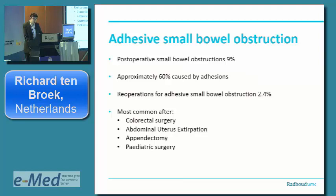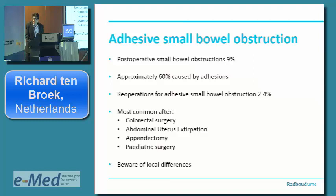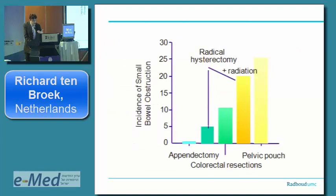Pediatric surgery patients have a long life ahead of them, so they have a lot of time to develop bowel obstruction. We should also beware of local differences — in Japan, for instance, they do a lot of upper GI surgery including intraoperative chemotherapy and radiotherapy, so there are more bowel obstructions after upper GI surgery. Appendectomy has a low five-year risk, while colorectal resections and hysterectomy have a higher incidence of small bowel obstruction.